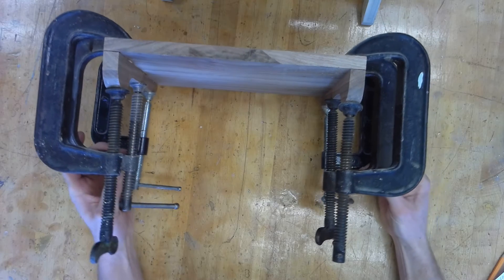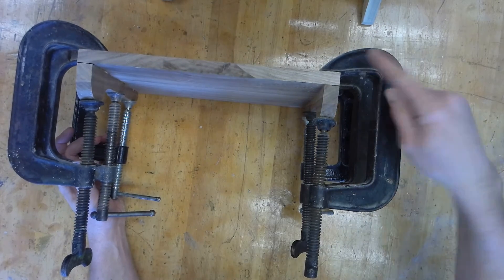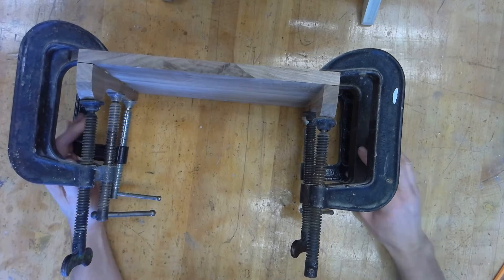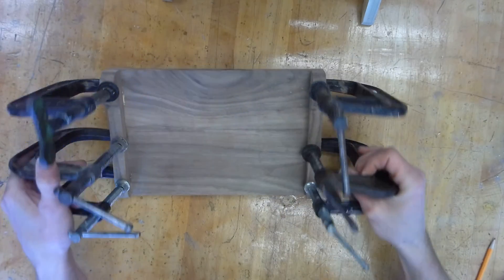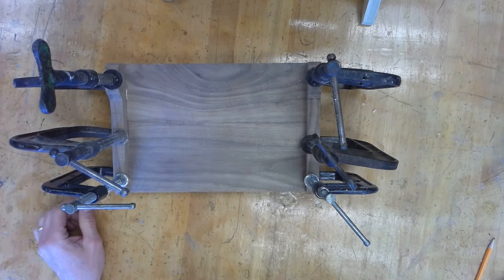This is also an option. It's a little more cumbersome to use, but these are C-clamps. You can see the shape, it's in the shape of a C. We want to squeeze that down pretty good, so I've got three C-clamps on each side.